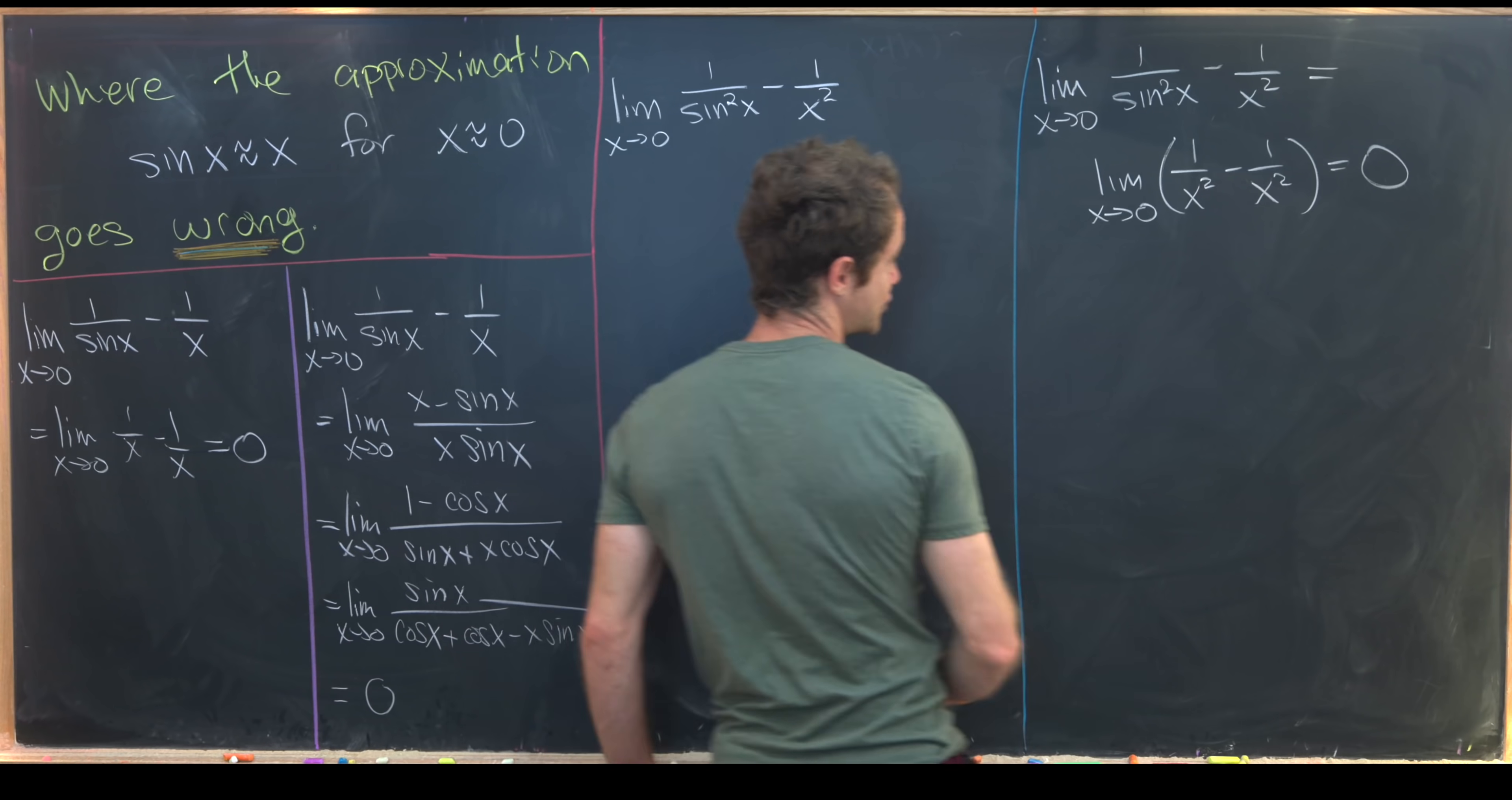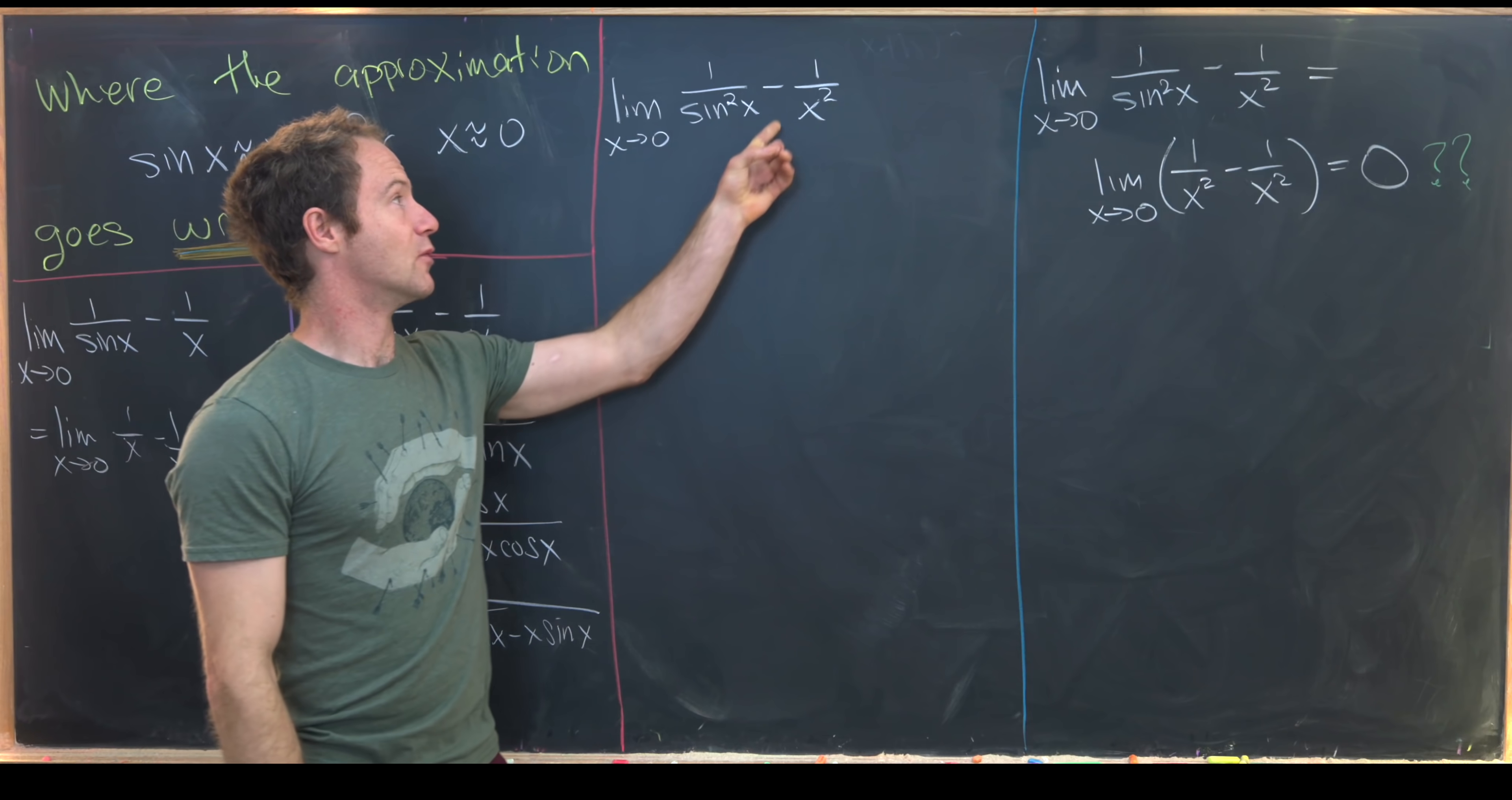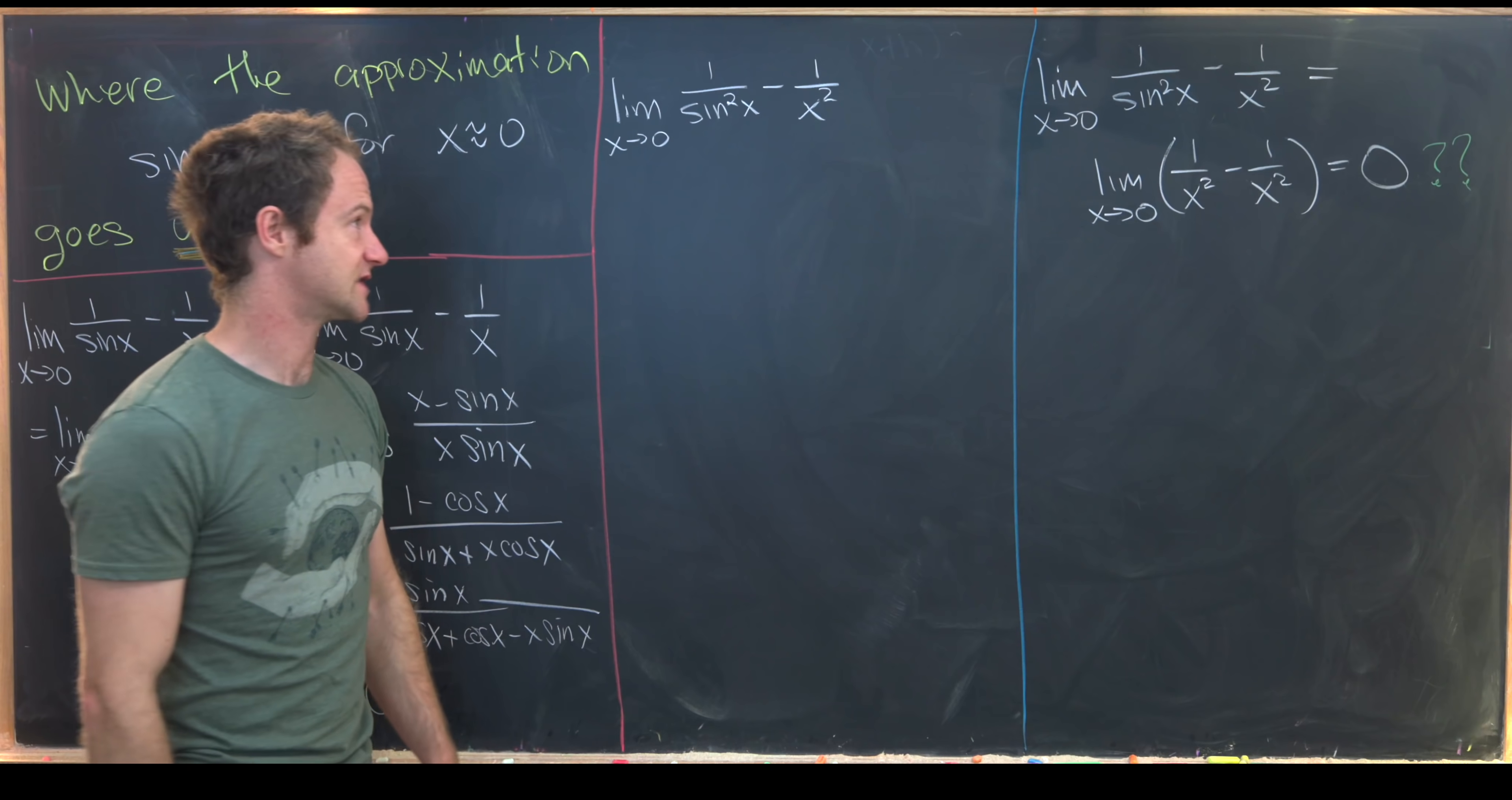So the big question here is, does this trick work in this case as well? In other words, can we do a more formal limit over here and also get a limit of zero? Well, obviously, since there's a punchline to this video, the answer should probably be no. But let's just make sure that that's true.